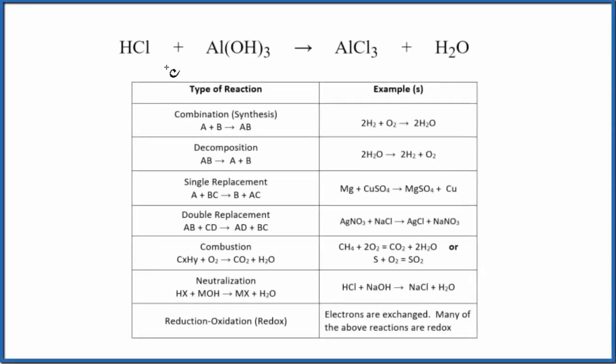In this video, we'll take a look at the type of reaction for HCl plus Al(OH)3. This is hydrochloric acid plus aluminum hydroxide.